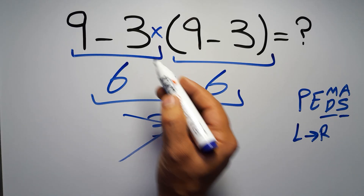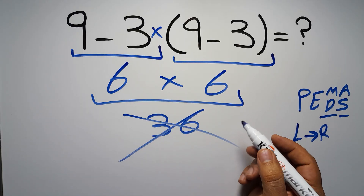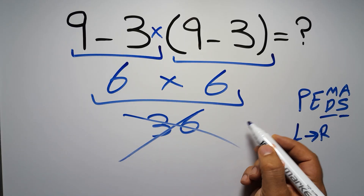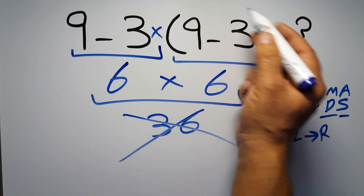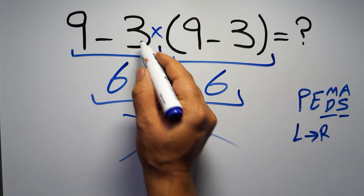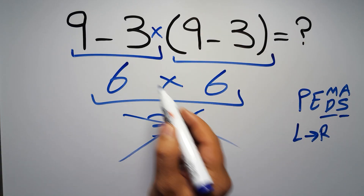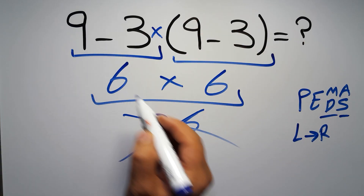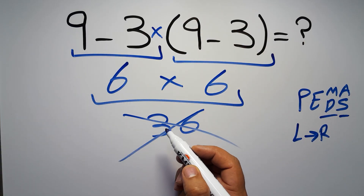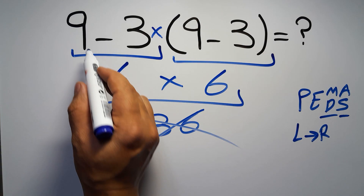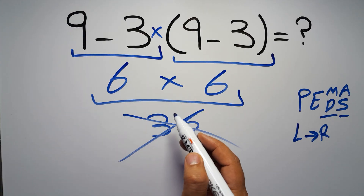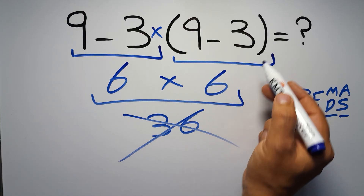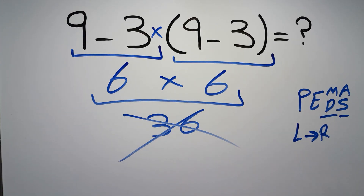So according to PEMDAS, first we have to do this parentheses, then this multiplication, and finally this subtraction. If we do this subtraction before this multiplication or this parentheses, it is wrong.